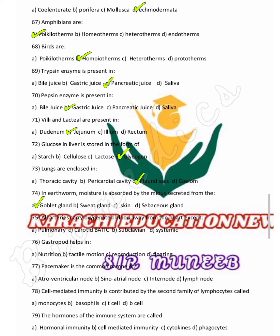All arteries carry oxygenated blood away from the heart, except the pulmonary artery. This question is repeated. The pulmonary artery carries deoxygenated blood.